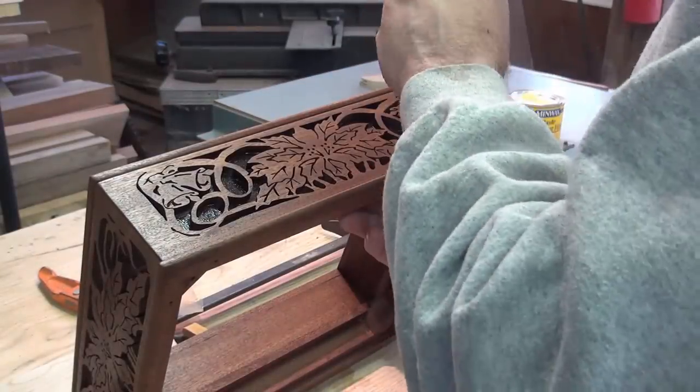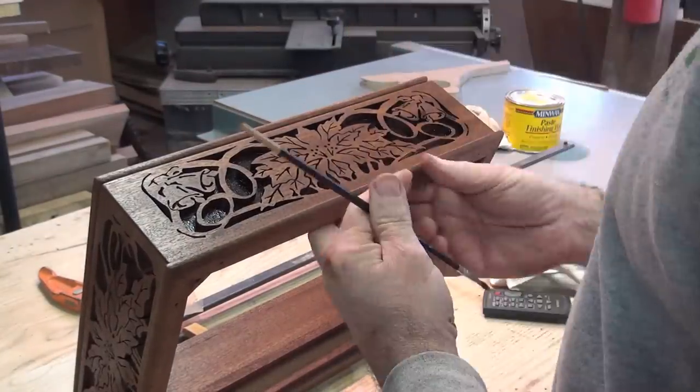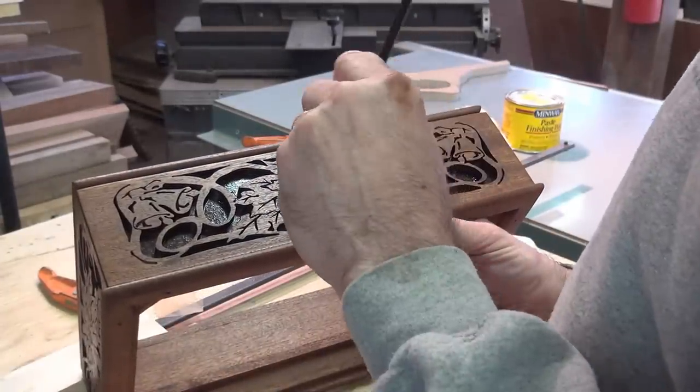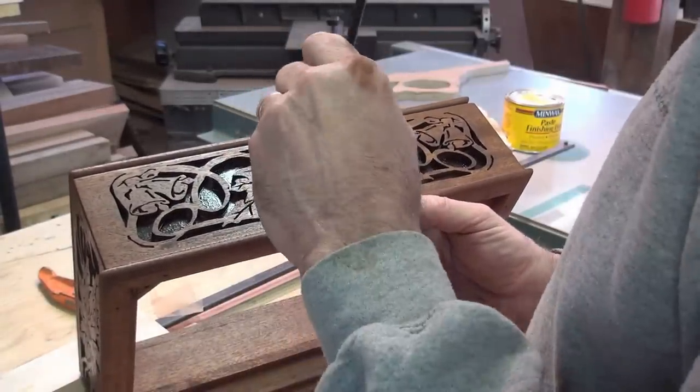Once the box is sealed I take a very small brush and I use the pigment that is left in the bottom of the can of stain. I want to make all the inside cutouts much darker than the outer faces.